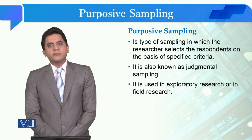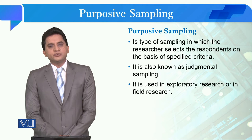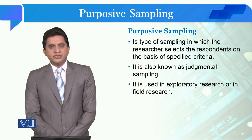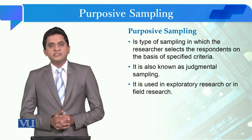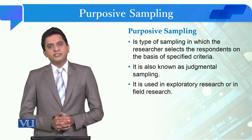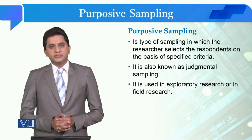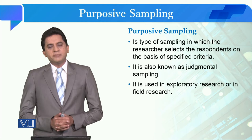The last non-probability sampling type we studied was convenient sampling, in which the researcher selects respondents on the basis of his or her convenience. But in purposive sampling, the researcher does not look at their own convenience; rather, they develop a selection criteria, and on the basis of that selection criteria, the researcher selects the respondents from the population.